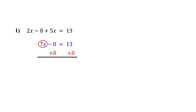Now on the left, negative 8 plus 8 is 0 — they cancel each other out. This leaves 7x alone. On the right, 13 plus 8 gives us 21. This is now a one-step equation, so our final step is just to isolate x. Notice that x is being multiplied by 7, so to get x by itself, we do the opposite of multiplication — we divide by 7.